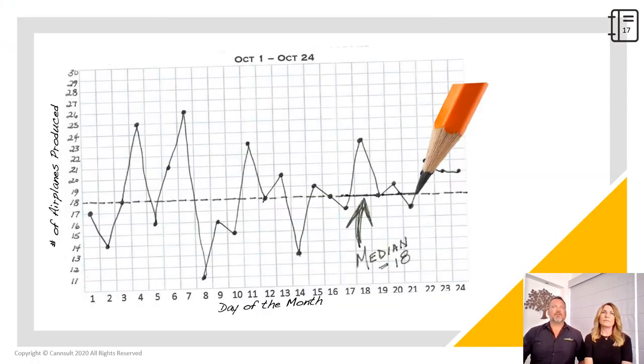Here's our example of the production volume run chart. The y-axis is the count of airplanes produced. The x-axis across the bottom is the day of the month. The dots plotted are the number of planes produced each day. Did you remember to include a median line? When we get to the analyze phase, you'll see that the key to analyzing a run chart is the inclusion of a median line.